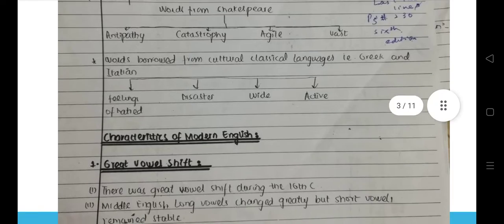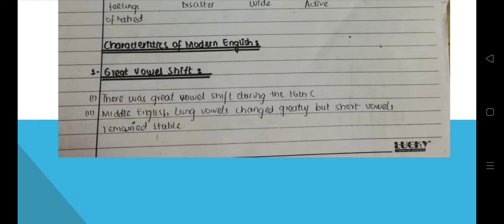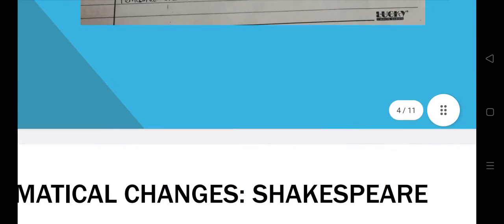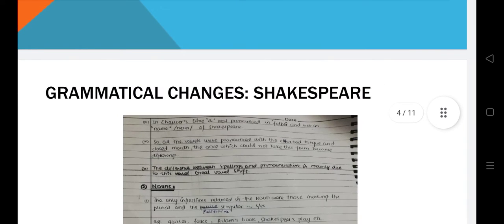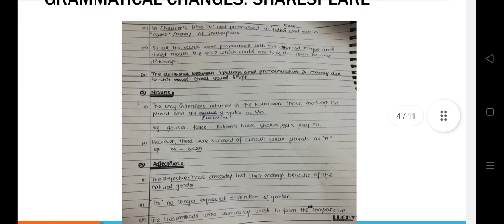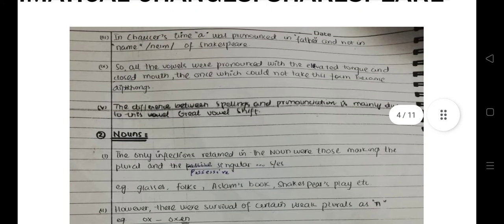Words from Shakespeare include antipathy, catastrophe, and agile, among many words he introduced. Characteristics of modern English include the Great Vowel Shift, which was a major shift during the 16th century in terms of sounds. Middle English long vowels changed greatly, but short vowels remained stable.